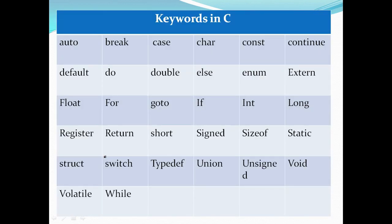The 32 keywords in C are: assert, break, case, char, const, continue, default, do, double, else, enum, extern, float, for, goto, if, int, long, register, return, short, signed, sizeof, static, struct, switch, typedef, unsigned, void, volatile, and while. These keywords will be used throughout the series, including data types like char, int, and float.